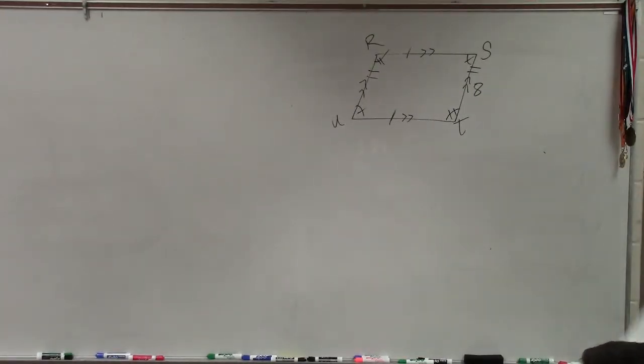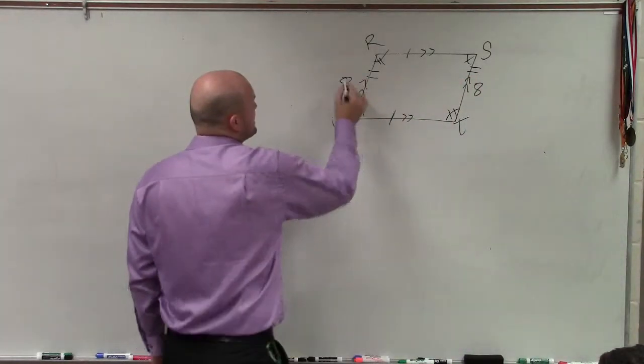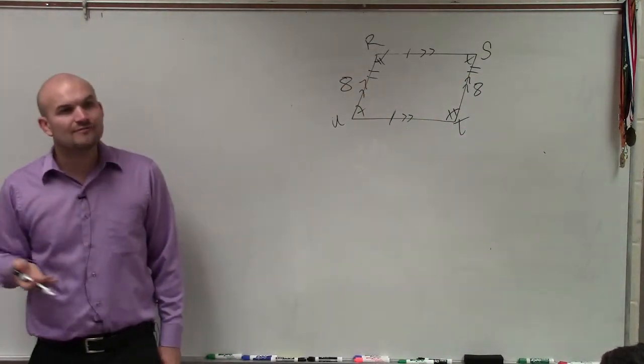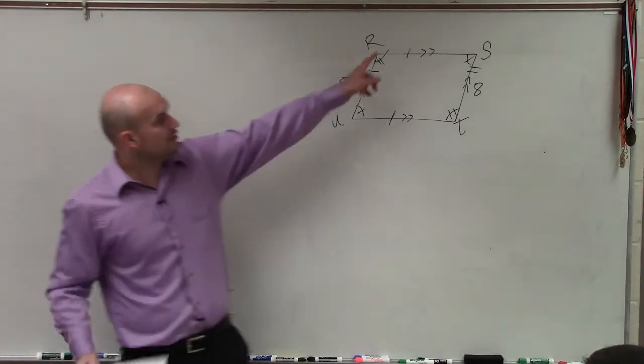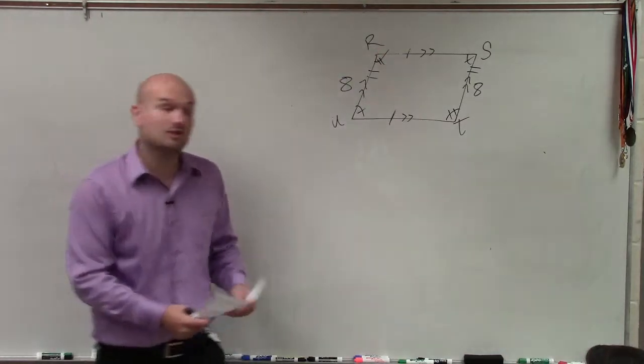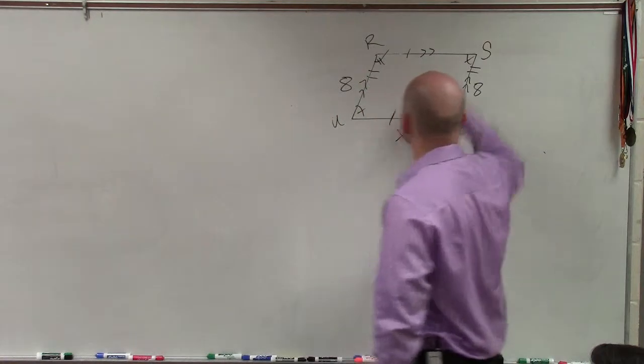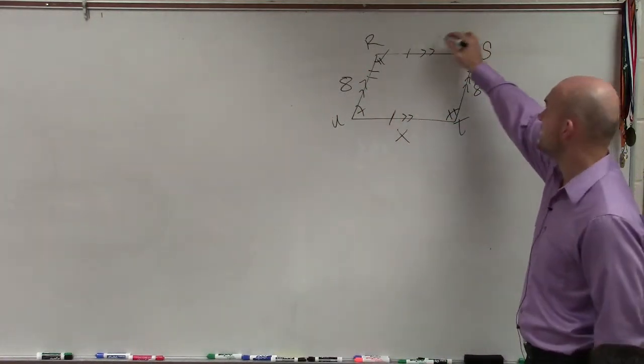So if I know that opposite sides are congruent, if that's 8, that means I know this side is 8. That's why that information is helpful. We do not know the length of UT. So since we don't know the length of UT, we'll say that's x. And then if that's x, then we know this has to be x.